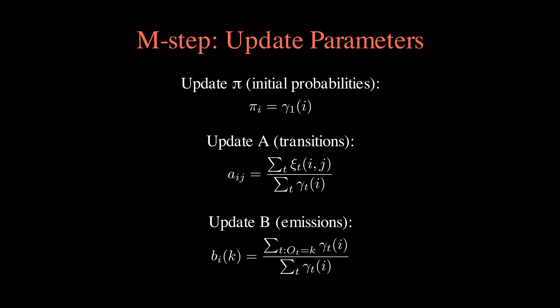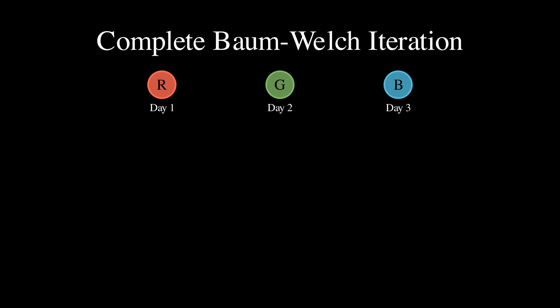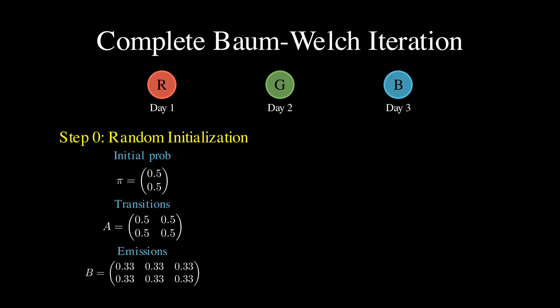Let's see this in action with a concrete example using our mood and hat color scenario. Suppose we observe someone wearing red, green and blue hats over three days, and we want to learn the parameters of our hidden Markov model from scratch. We start by randomly initializing all our probabilities. Maybe we say there's a 50-50 chance of starting in either mood, equal chances of transitioning between any states, and equal chances of emitting any hat color from any mood. Yes, these guesses are probably completely wrong, but that's okay, because the algorithm will fix them.